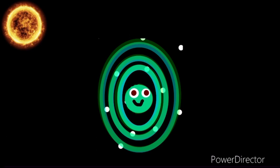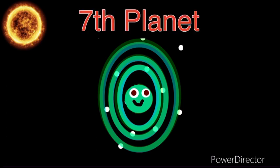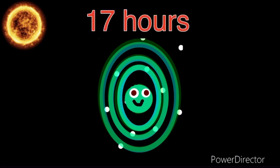I am Uranus, the 7th planet from the sun, 17 hours is just one day on me.